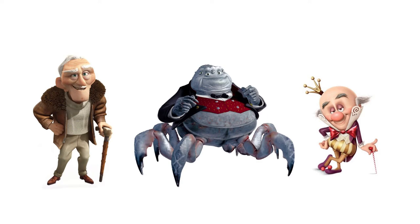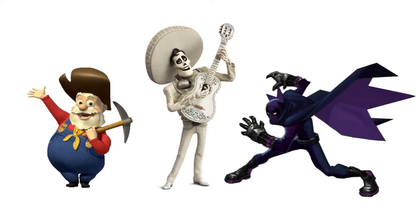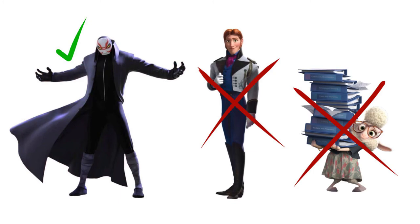Twist villains, although not as frequently used, are a very critical subcategory in the classic villain design style. A successful twist villain uses the elements of character design to contradict the initial good guy persona the villain tries to sell the protagonist. Essentially, if a twist villain is a wolf in sheep's clothing, you should be able to spot out the wolf just by looking at their costume or physical features. Otherwise, their true nature should be revealed in the inconsistency of their actions throughout the story.